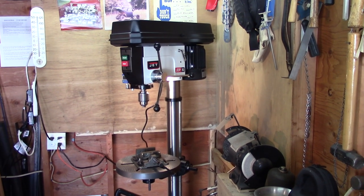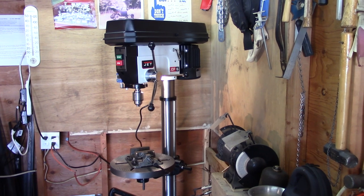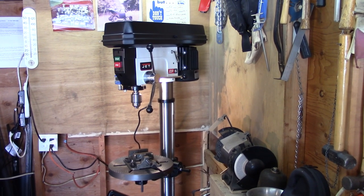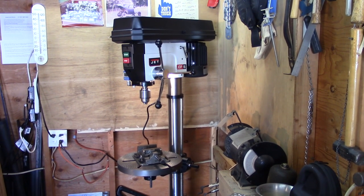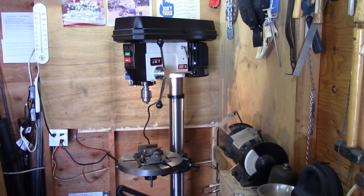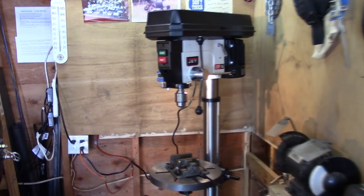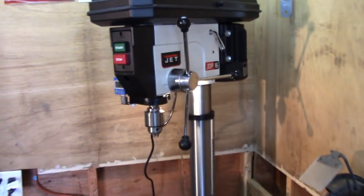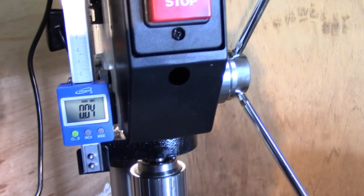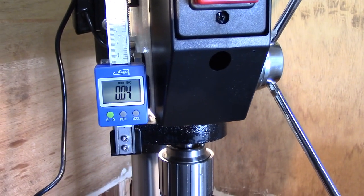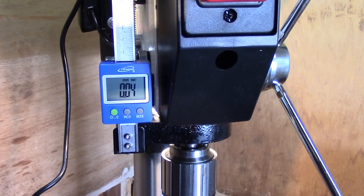Hi everybody, I have a Jet JDP-16, it's advertised as a 17-inch drill press in the Jet catalog. What I did to this machine is I added a DRO, and this is an iGaging unit. It's under 50 bucks on Amazon.